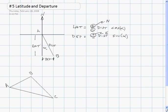So in the case of the line I just drew, the latitude is negative and its value is 2. So the latitude of AB is negative 2, and the departure of AB is positive 1.